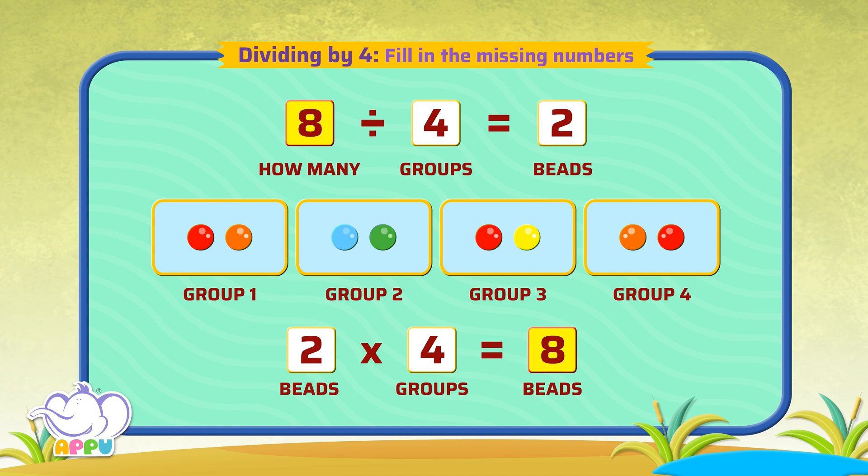8 divided by 4 equals 2. We write it as 8 divided by 4 equals 2. Hip, hip, hurray!